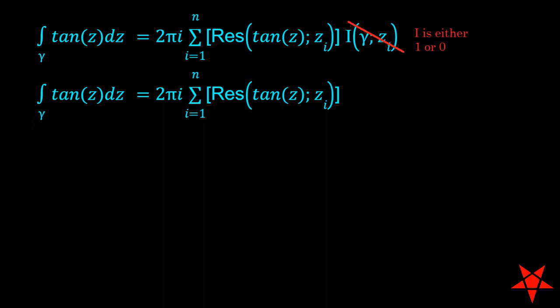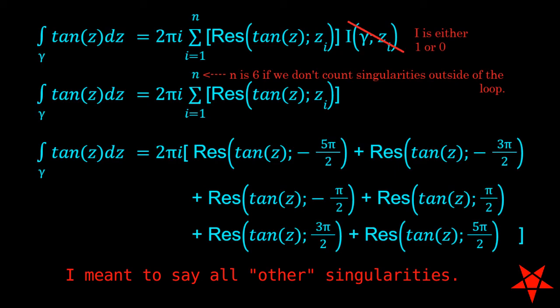There are only six residues inside of little gamma, so n is six for our purposes since all singularities on the real axis get multiplied by zero in formula 4.21.